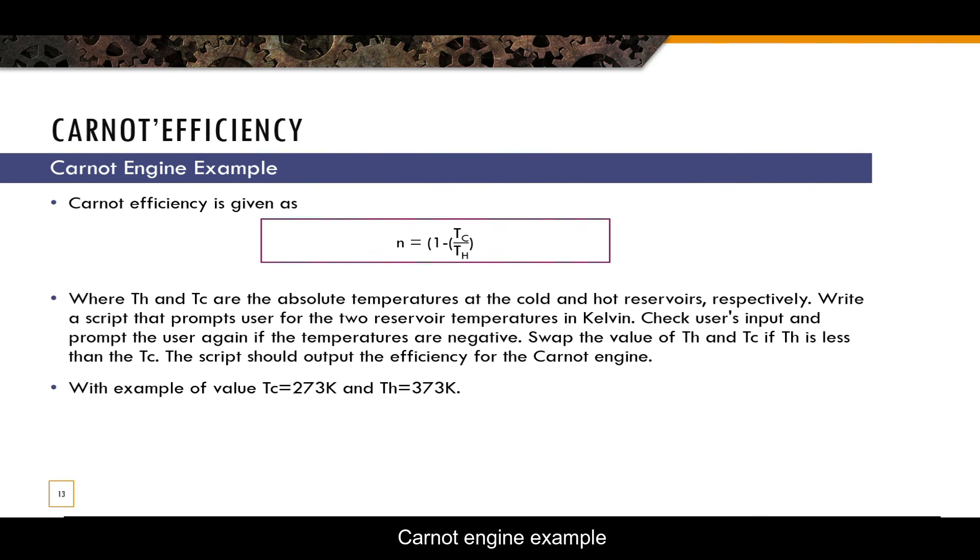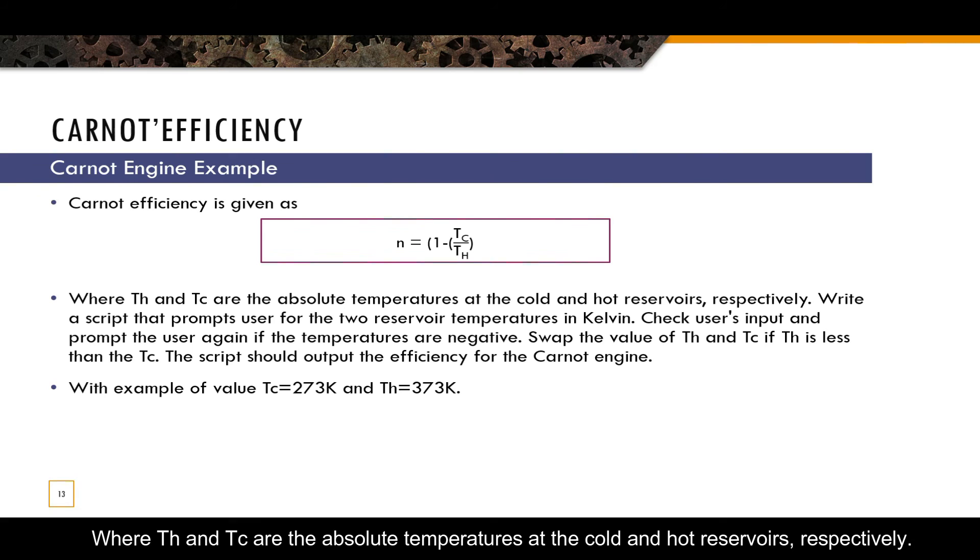Carnot engine example. Carnot efficiency is given as N equals 1 minus TC over TH. Where TH and TC are the absolute temperatures at the cold and hot reservoirs, respectively.